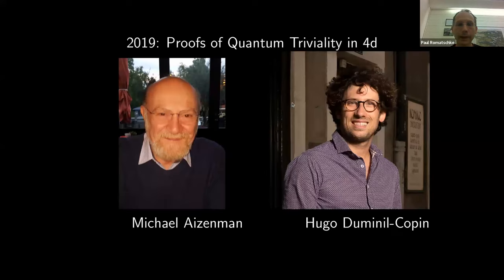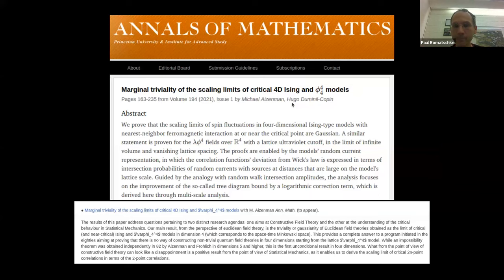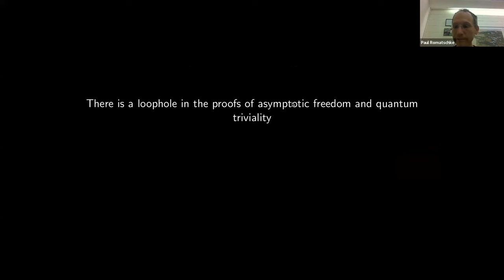So that's the state the field is in. What I want to do is poke at these proofs and give you a notion that there is a loophole — the same loophole — in both the proof of asymptotic freedom and the proof of quantum triviality.